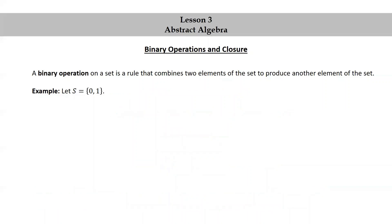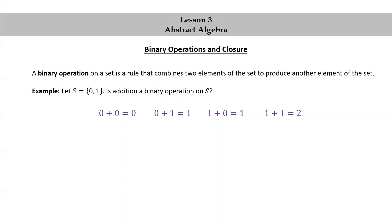Let's look at another example. We'll use the same set: S is equal to the set consisting of 0 and 1. This time we ask: is addition a binary operation on S? Well, let's do the four computations. 0 plus 0 is 0 — okay. 0 plus 1 is 1 — okay. 1 plus 0 is 1 — okay. But 1 plus 1 equals 2, which is not okay because 2 is not in the original set S. So the answer is no — the problem is that 1 plus 1 equals 2 and 2 is not an element of S.